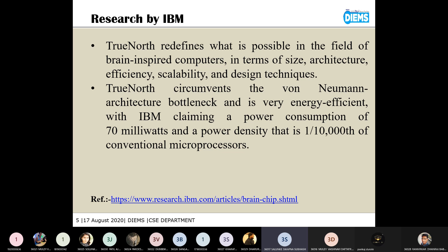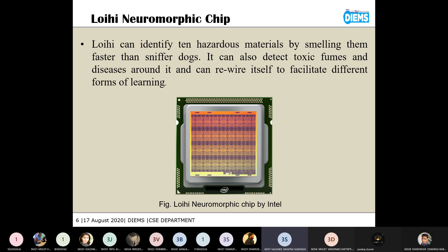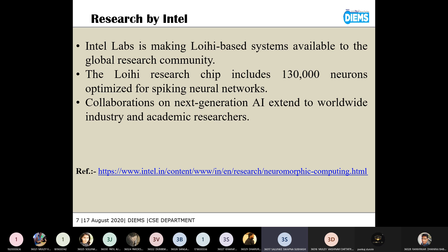The next chip is the Loihi chip. It is again a neuromorphic chip based on brain structure, and it is developed by Intel. This chip can efficiently detect images or even detect smells. It takes a very less amount of data to train the model. If we use almost three to four images of a particular object to train the system which has this chip, that system can easily detect that object further whenever the object comes in front of that system.